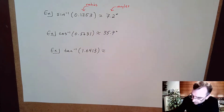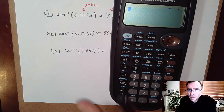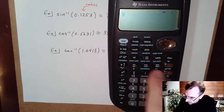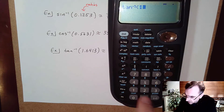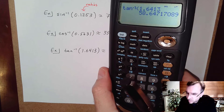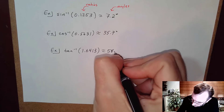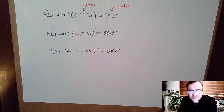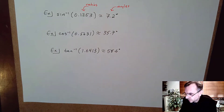Finally: tangent inverse of 1.6413. Entering that, I get approximately 58.6 degrees. That's how you use the inverse trig functions on your calculator.